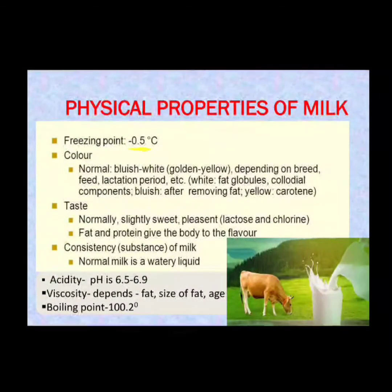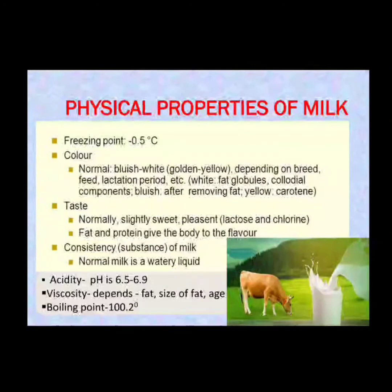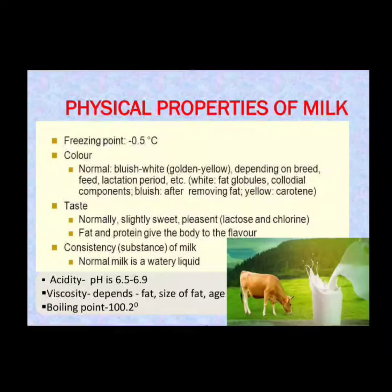The boiling point is 100.2 degrees centigrade. The viscosity of milk depends on the fat content of the milk. Coming to the acidity, the pH of milk ranges from 6.5 to 6.7, and it could reach up to 6.9. The acidity is proportional to the amount of microorganisms present in milk.